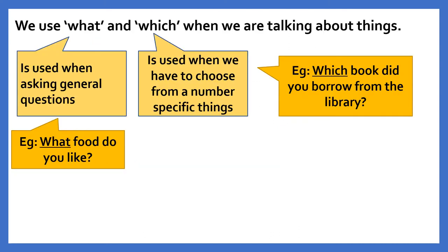We use 'what' and 'which' when we are talking about things. The interrogative pronoun 'what' is used when asking general questions — for example: What food do you like? The interrogative pronoun 'which' is used when we have to choose from a number of specific things — for example: Which book did you borrow from the library?